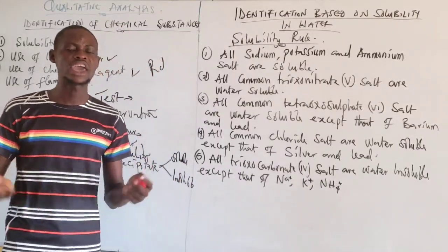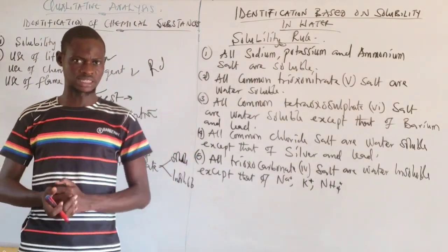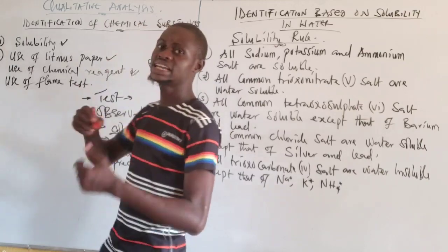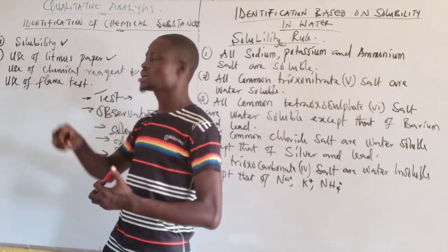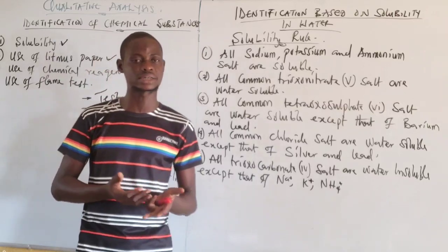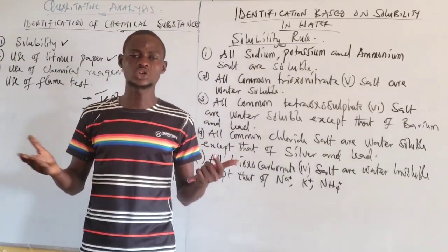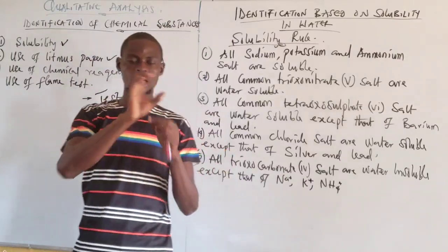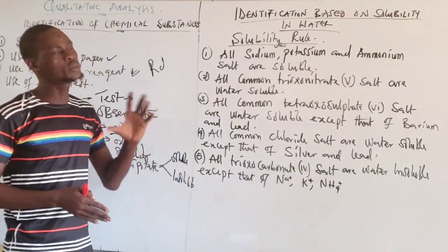Under the use of chemical reagents, that is where they mostly ask questions on qualitative analysis — specifically testing for cations and anions. Cations are produced by metals, while anions are non-metals. The fourth method is the flame test, which is less commonly asked in exams but is still important to know.